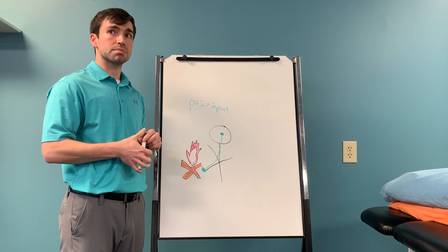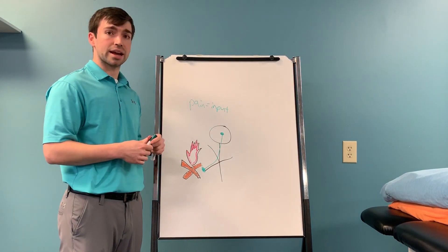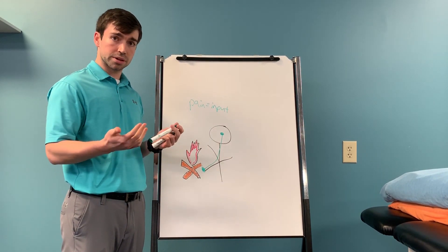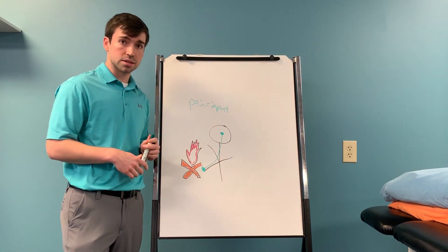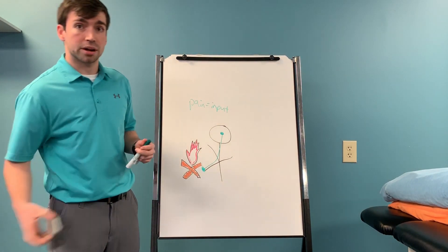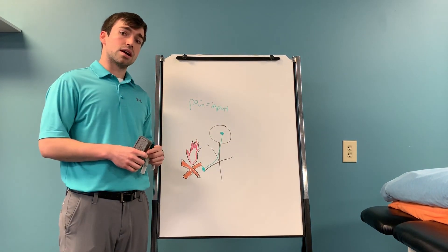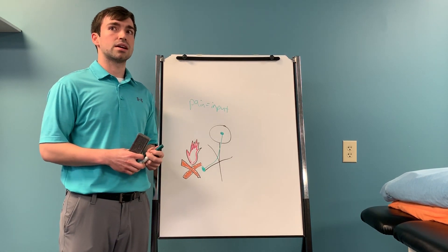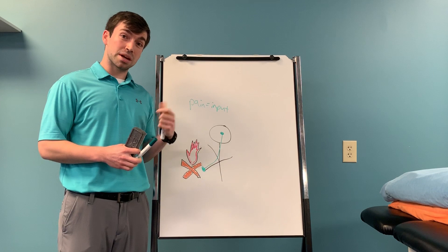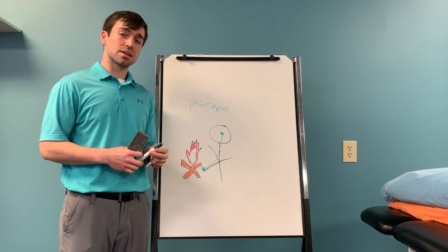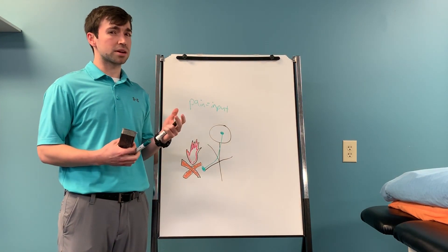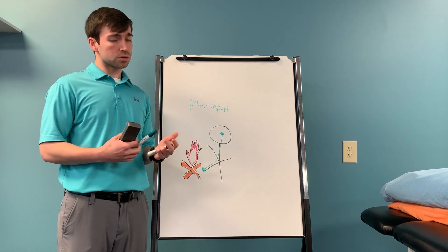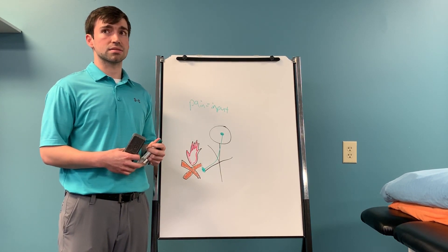An unfortunate part of this model is that it doesn't take into account how some people can experience such variability of pain. For example, if I were to walk across the parking lot today and break my ankle, I'm going to experience quite a bit of pain. But if I were to walk across that same parking lot and break my ankle and there's a bus coming at me, then I'm not going to really experience any pain until I get out of the way of that. For a long time, we used to just simplify this as adrenaline.